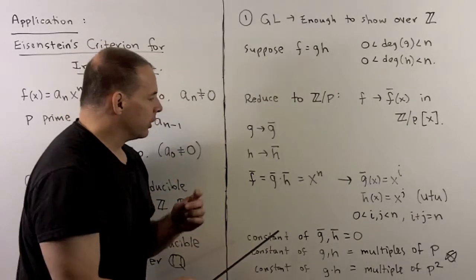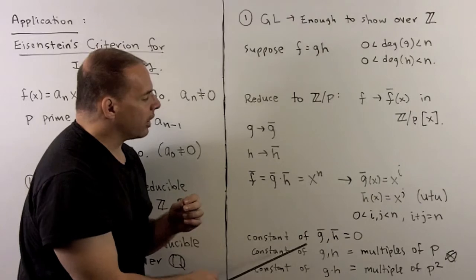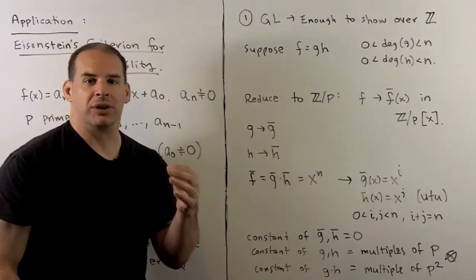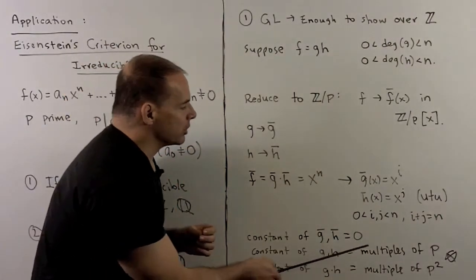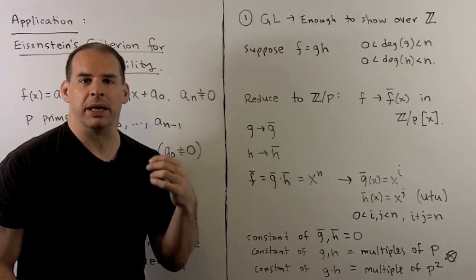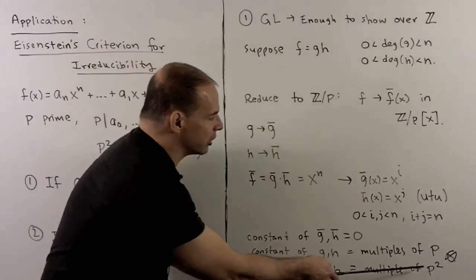Now, what does this mean? Well, here we have the constant term of ḡ and h̄ are both equal to 0. So that means the constant terms of g and h are both multiples of p. So the constant term of g times h is going to be a multiple of p², and that's going to be a contradiction.